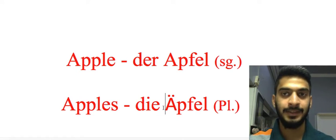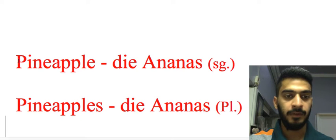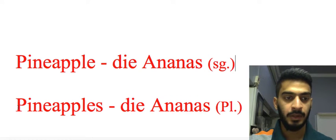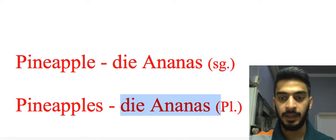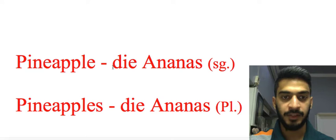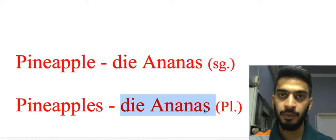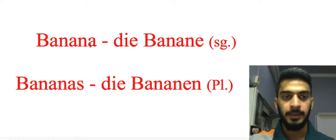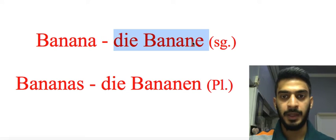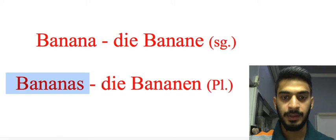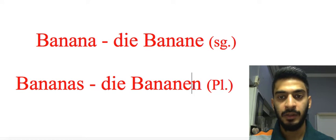Then we have pineapple — the word is 'die Ananas' in singular form, pineapples — 'die Ananas' in plural form. As we can figure out, there is no difference between singular and plural; both words are the same. Then banana — 'die Banane' singular form, bananas — 'die Bananen' plural form.